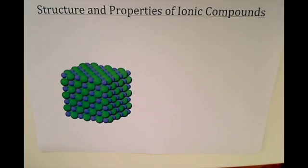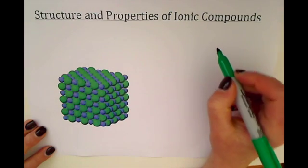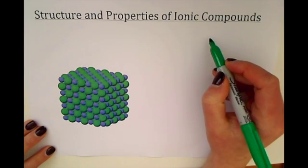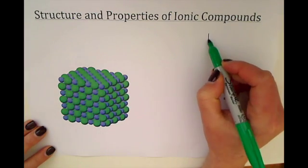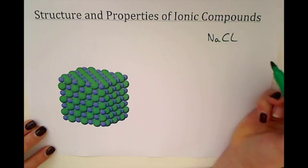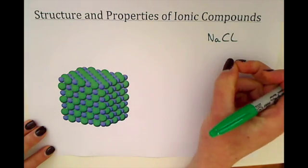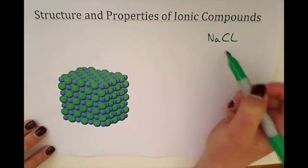This video is about the structure and properties of ionic compounds. You only need to know about the structure of one in particular, which is sodium chloride, or Na for sodium and Cl for chlorine, which when bonded together makes sodium chloride.